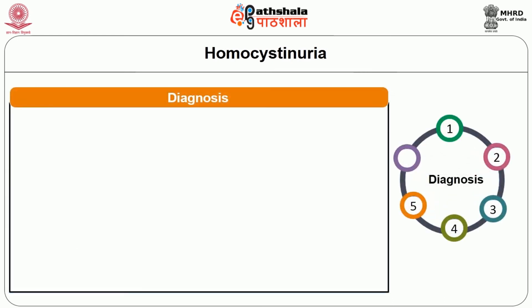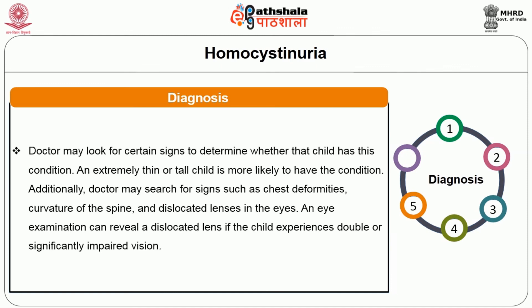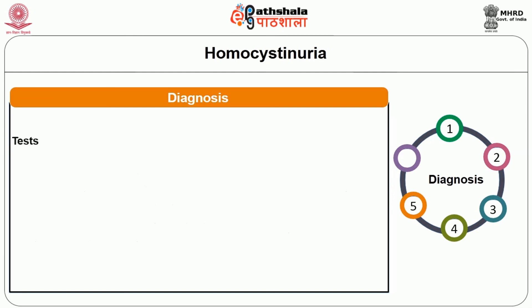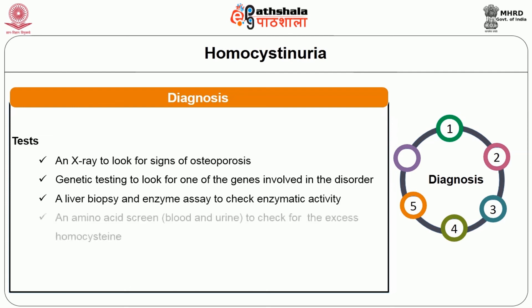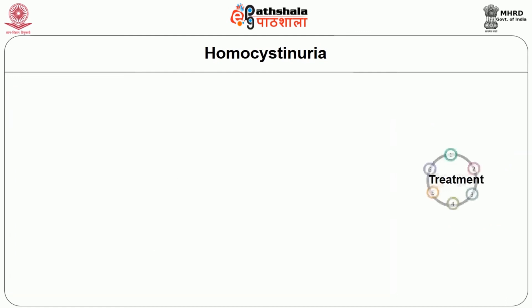For diagnosis, doctors may look for signs such as an extremely thin or tall child, chest deformities, curvature of the spine, and dislocated lenses in the eyes. An eye examination can reveal a dislocated lens. Available tests include an X-ray to look for osteoporosis, genetic testing for involved genes, a liver biopsy, an enzyme assay to check enzyme activity, an amino acid screen to check for excess homocysteine, and a skin biopsy.